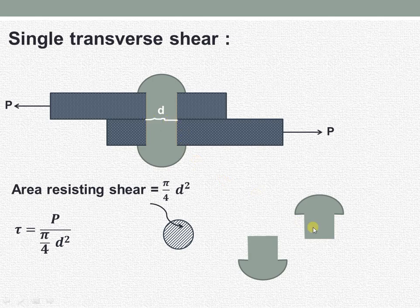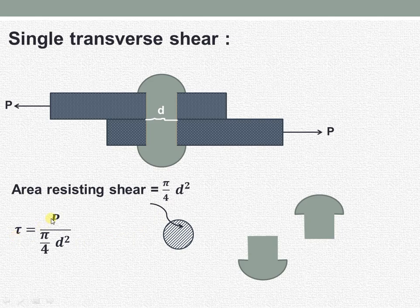This failure area is equal to π/4 D². The shear is taking place only at one side, and the tangential force is acting on this area. Therefore, since shear is taking place only at one place, this is the case of single shear. The area resisting this shear is π/4 D², so the shear stress equals P divided by π/4 D².